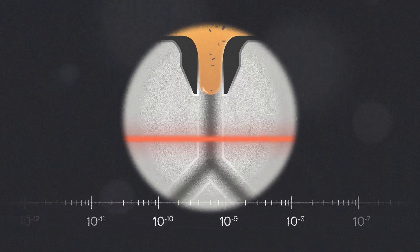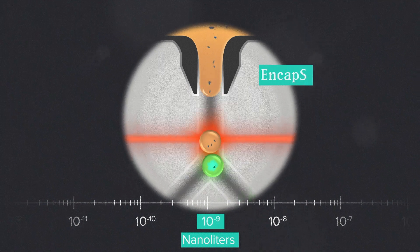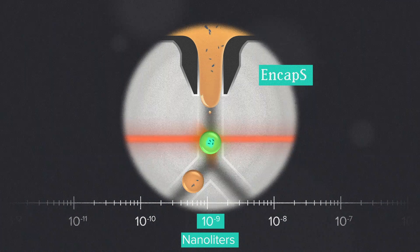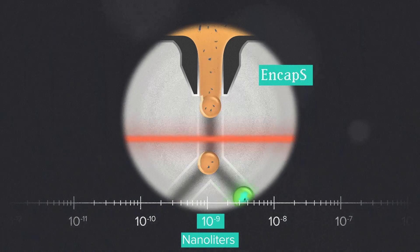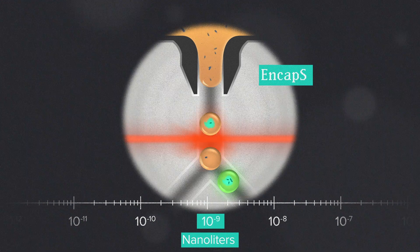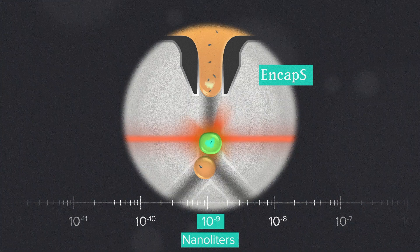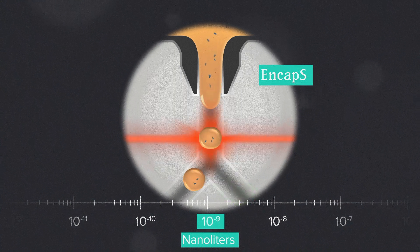The very smallest scale at which we can run a bioprocess is the nanoliter scale. This is with a piece of technology unique to Ginkgo called NCAPS, for encapsulation and screening. With NCAPS, we can package cells into microscopic hydrogel beads. Although the beads are very small, they have all the essentials — there's room to grow, media to consume, and they capture any fermentation products the cells put out. We then measure these products using fluorescence to sort out the top performers. The advantage of working at the very small scale is the sheer number of samples we can screen — up to 100,000 in a single run.